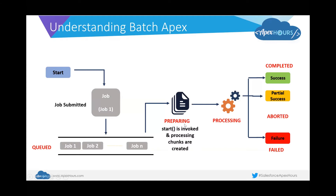There is some preparatory work done by the platform — this gives you a better sense of how you can use batch jobs to solve your problems in the real world. Once a batch job gets picked up, there is some preparatory work done in the form of the start method. A batch job operates over a specific scope of records, and the scope is defined in the start method. This entire scope is then broken down into chunks.